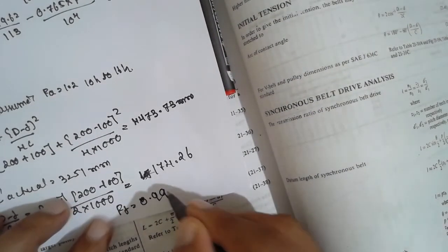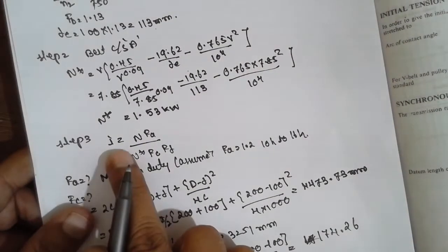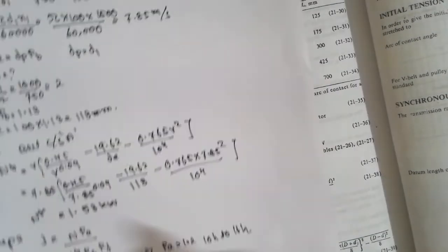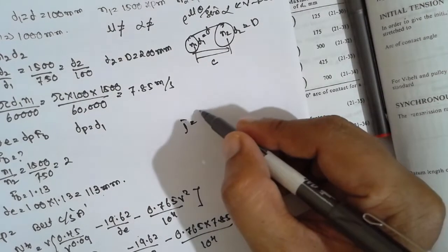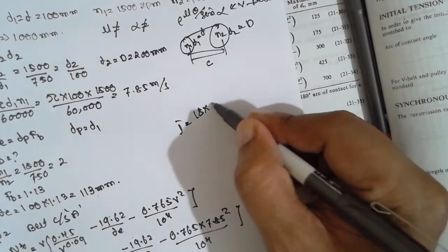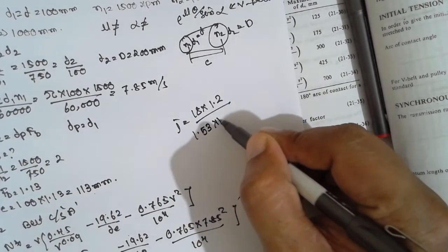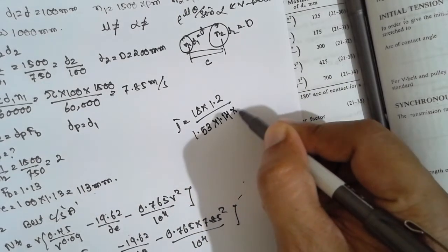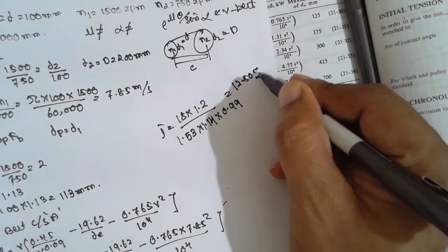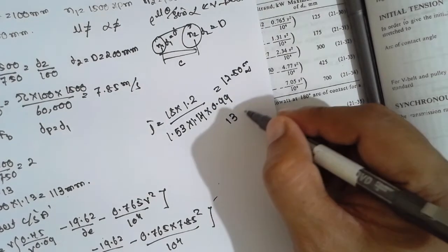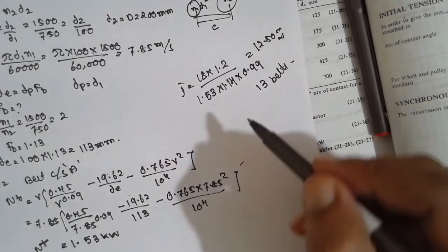We have all values now. Substituting into the formula: i = (18 × 1.2) / (1.53 × 1.14 × 0.99). The answer is 12.50, which we round up to approximately 13 belts. This is the complete solution. I am Siddhush Gadhankar. Thank you very much.